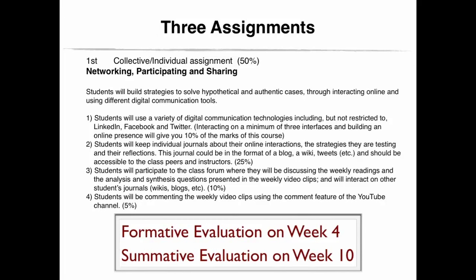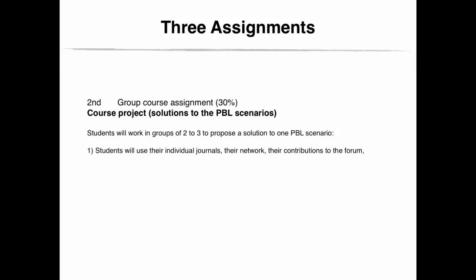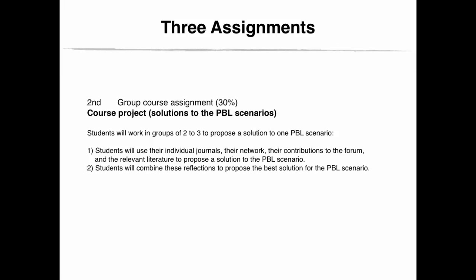The second assignment is the course project. Basically, this is the solutions you will provide to the PBL scenarios — this is group work. Students will work in groups of 2 to 3 to propose a solution to one PBL scenario. Students will use their individual journals, their network, their contributions to the forum, and the relevant literature to propose a solution. Students will combine these reflections to propose the best solution for the PBL scenario.